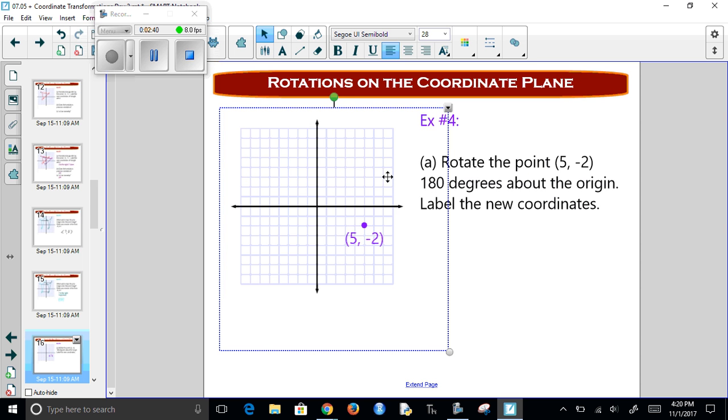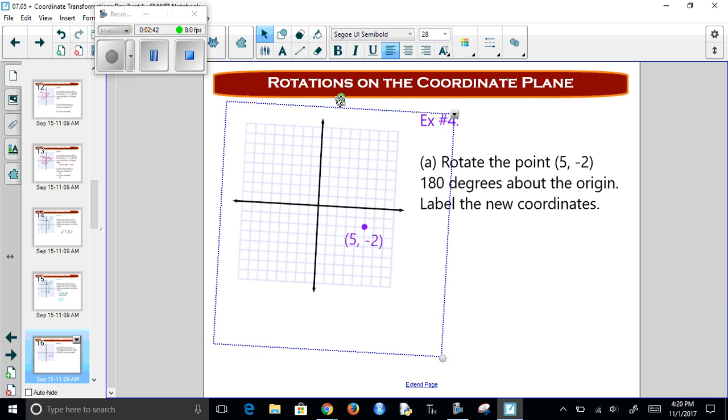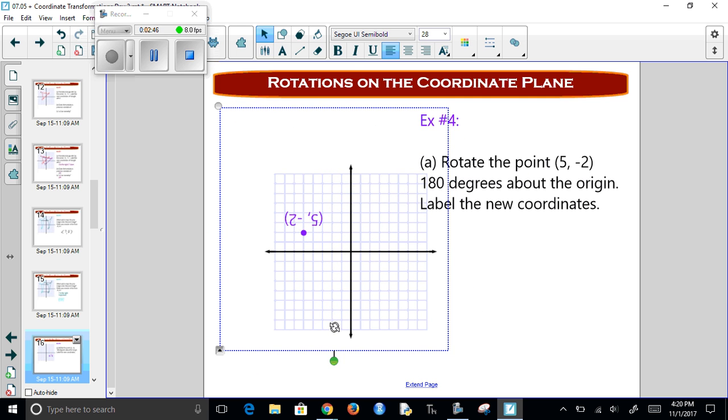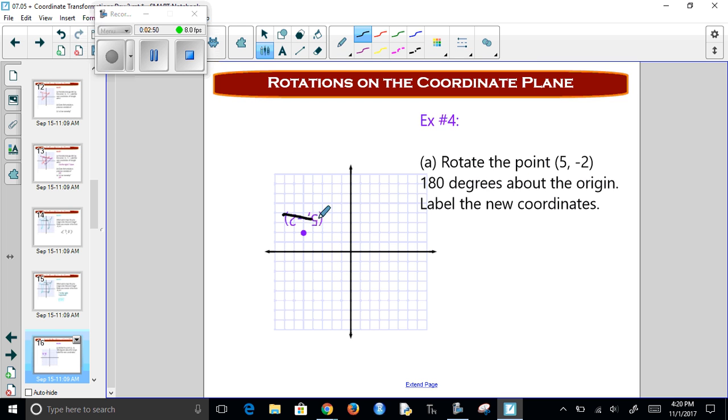So to do that, 180 degrees is halfway around, so that's 90, that's 180. Now we have to pretend like this isn't here. We just came upon this graph and we pretend that's x and y. And what would this point be? Well, I go to the left 5 and up 2.